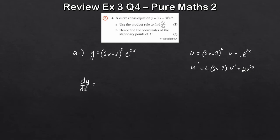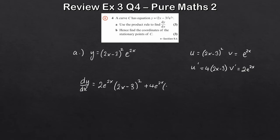Applying the product rule: dy by dx equals u times v prime plus v times u prime. That gives 2e to the 2x times 2x minus 3 squared, plus 4e to the 2x times 2x minus 3. So that's dy by dx from the product rule.